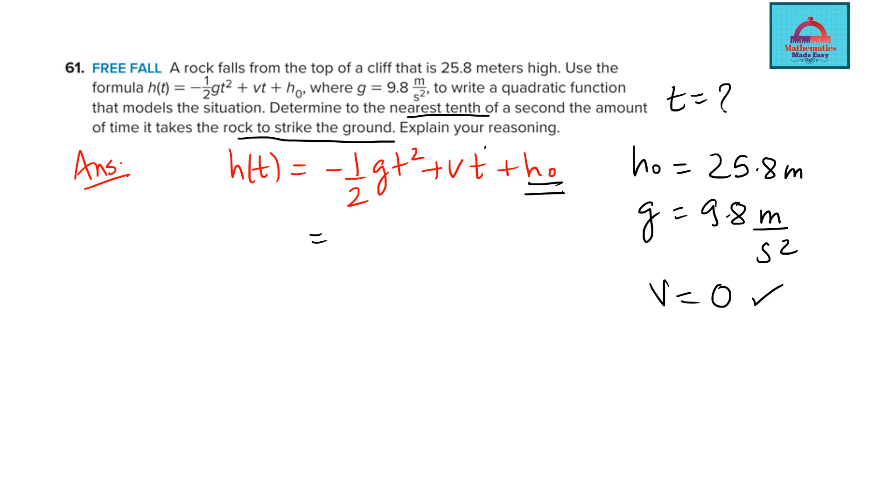So let's put that. So this term will go because V is 0. What you are left with 1 by 2 G is 9.8. T square you don't know. H0 is 25.8. Now use your calculator. Simplify. So this h(t) will come out to be equal to minus 4.9 T square plus 25.8.